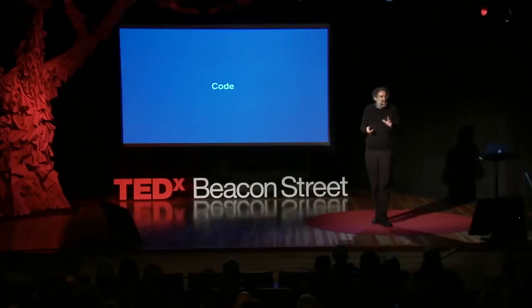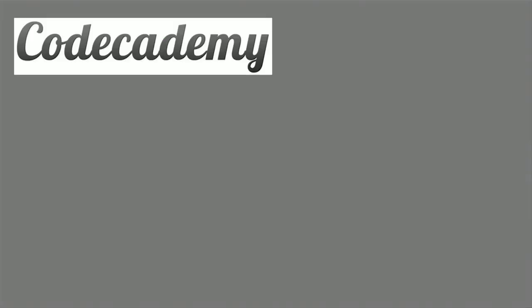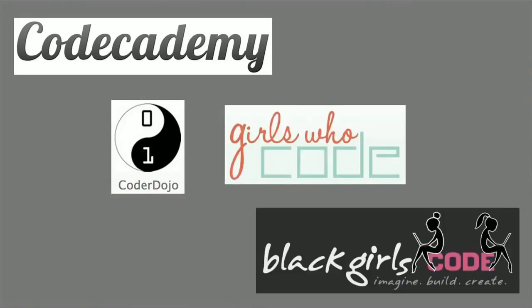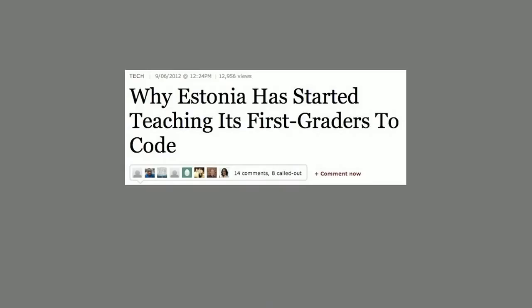Increasingly, people are starting to recognize the importance of learning to code. In recent years, there have been hundreds of new organizations and websites helping young people learn to code — places like Code Academy, events like Coder Dojo, sites like Girls Who Code or Black Girls Code. Just at the beginning of this year, New York City Mayor Michael Bloomberg made a New Year's resolution to learn to code in 2012. A few months later, the country of Estonia decided that all of its first graders should learn to code.